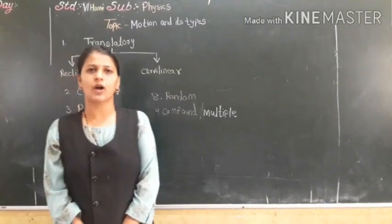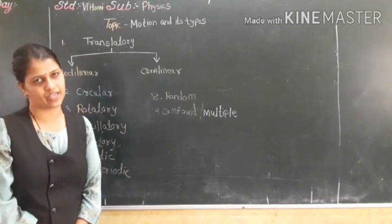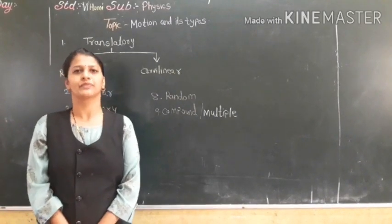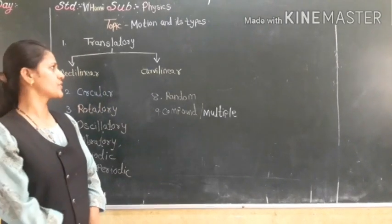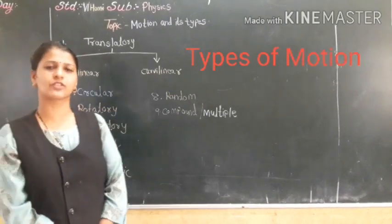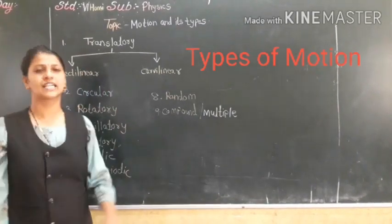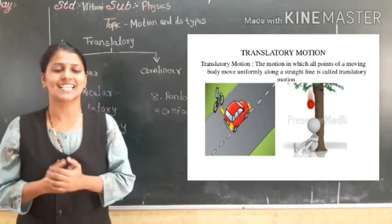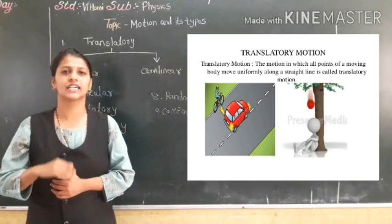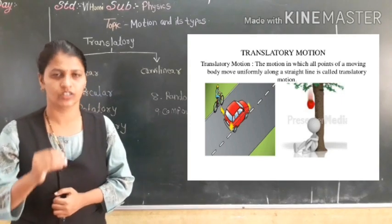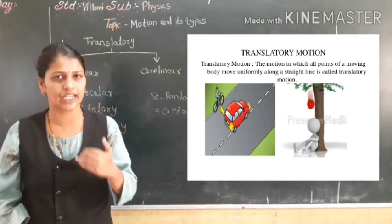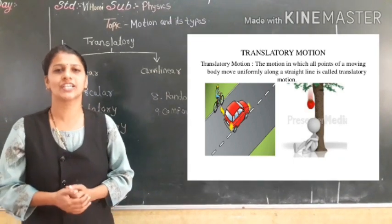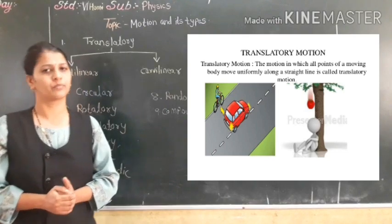In the last video we learned about motion and rest, and also discussed Newton's law of motion. Today we are going to discuss the types of motion. First is translatory motion — the object which moves in a straight line in a particular time is called translatory motion.